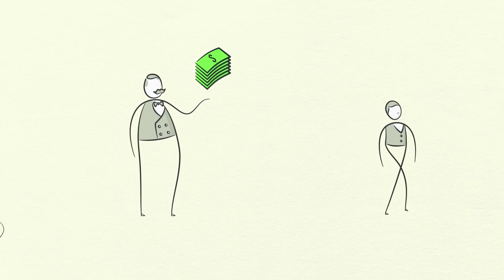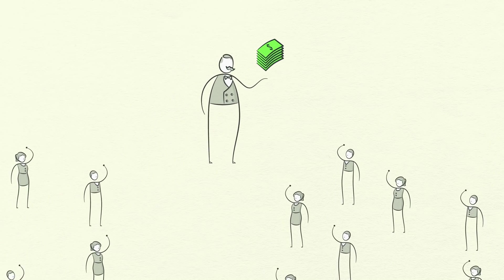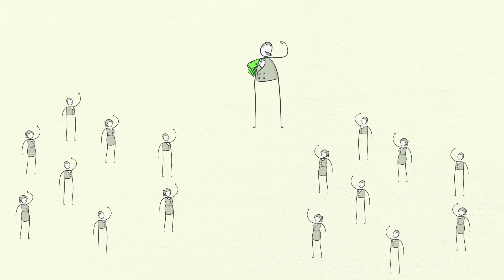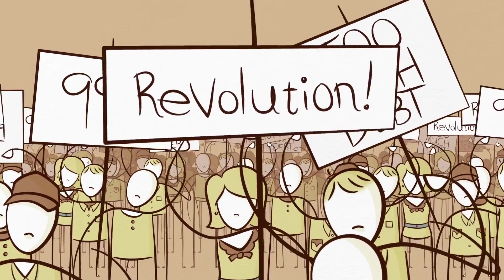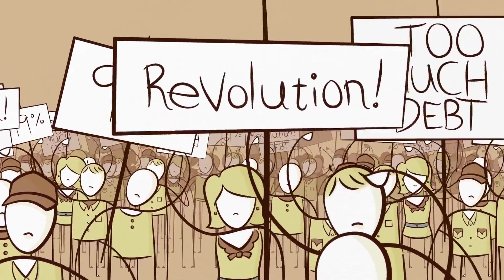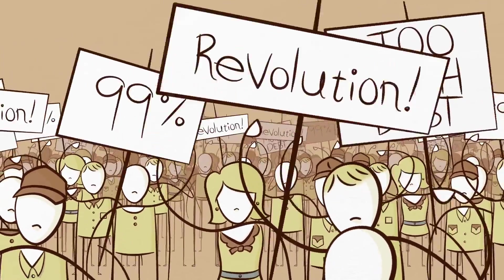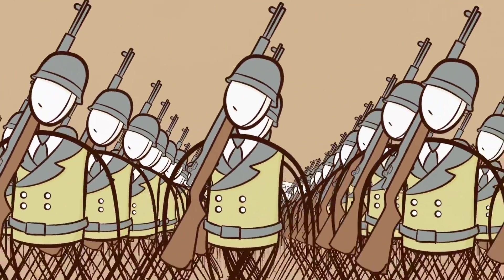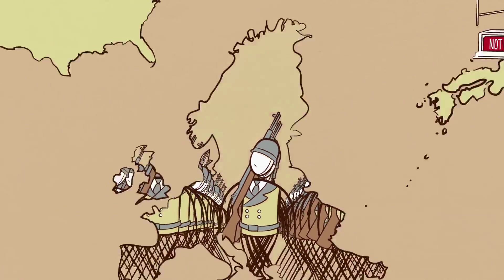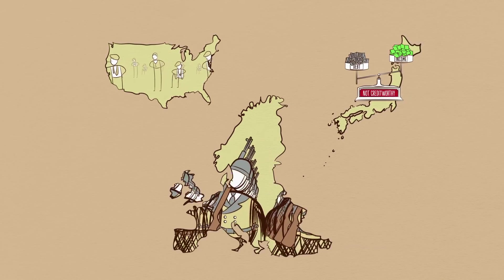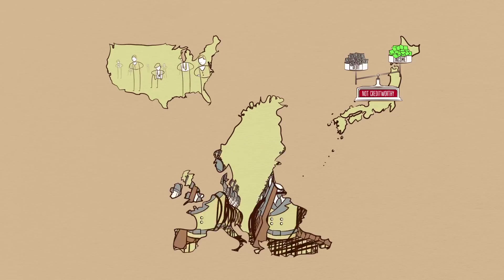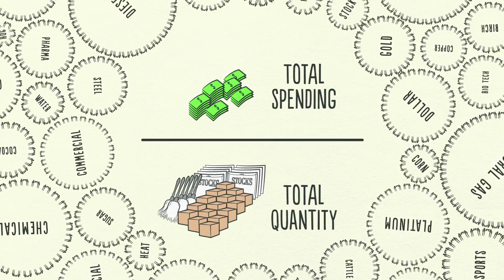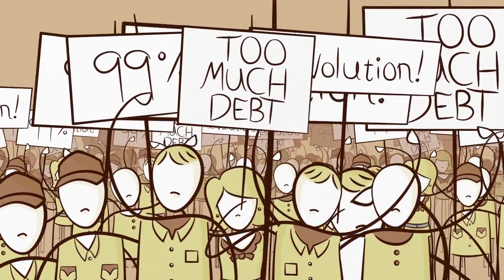The have-nots who are suffering begin to resent the wealthy haves. The wealthy haves, being squeezed by the weak economy, falling asset prices and higher taxes, begin to resent the have-nots. If the depression continues, social disorder can break out. Not only do tensions rise within countries, they can rise between countries — especially debtor and creditor countries. This situation can lead to political change that can sometimes be extreme. In the 1930s, this led to Hitler coming to power, war in Europe, and depression in the United States. People are desperate for money, and you remember who can print money — the central bank can.